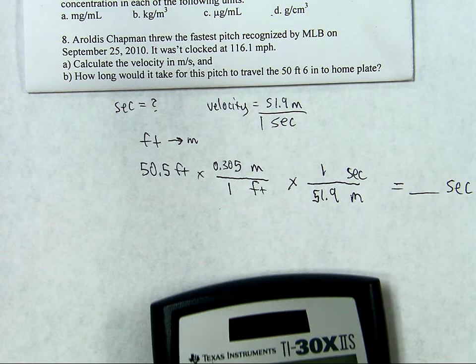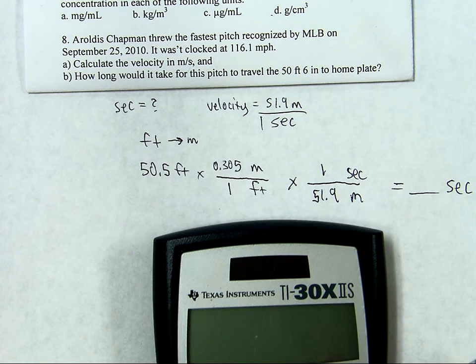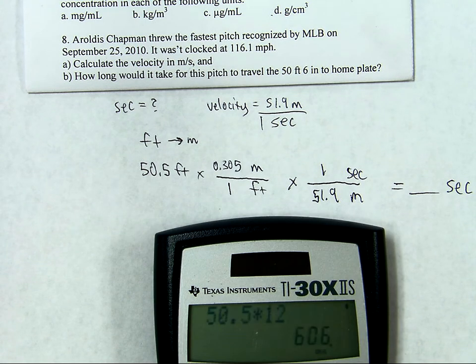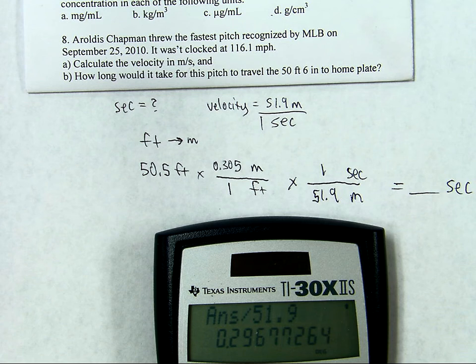Now, it is time to use that calculator to find out just exactly what this is going to be. So, 50.5 times 0.305 divided by 51.9. And, there's the answer.